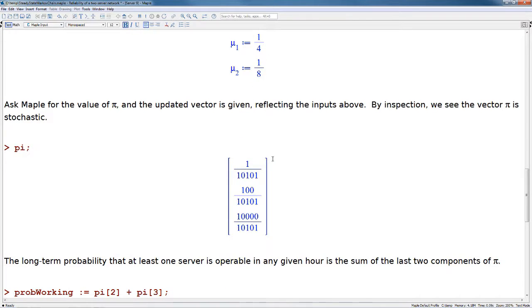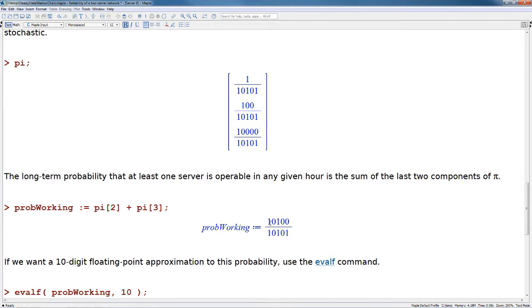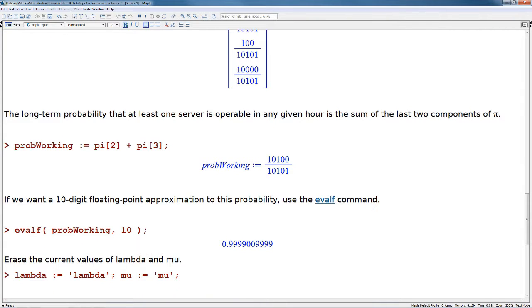By inspection, we can see that 1 plus 100 plus 10,000 actually does add up to 10,101, so this is a stochastic vector. To calculate the long term probability that at least one server is operable at any given hour, this equals the sum of the last two components of pi. The probability of working for this example is 10,100 over 10,101. Taking a 10 digit floating point approximation using evalf gives us 99.99%.